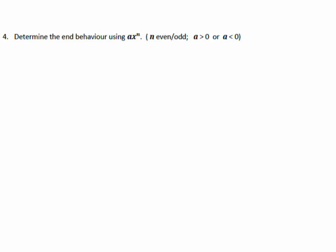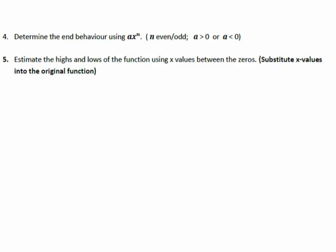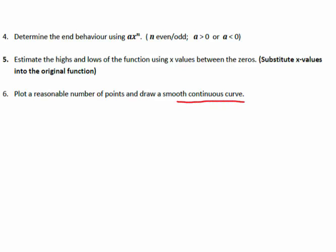Once we have the shape at each zero, we look at end behavior — whether the number in front is positive or negative. Then we estimate the highs and lows using x values between the zeros, substituting them into the original function. Once we have enough points, we can plot a nice, smooth, continuous curve — meaning we don't pick up the pencil.